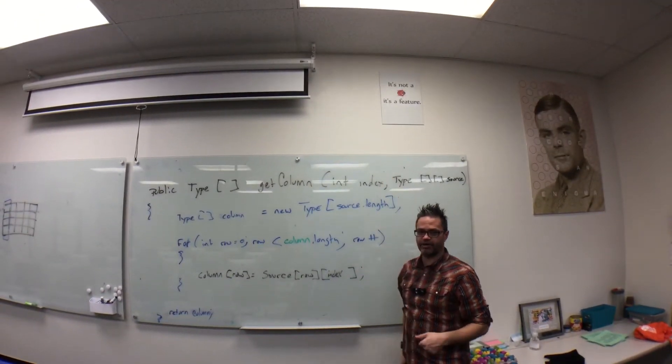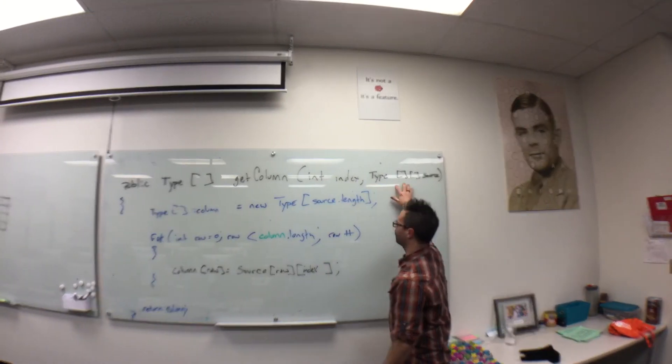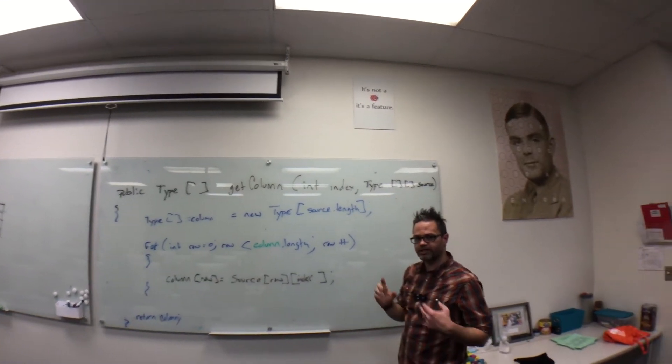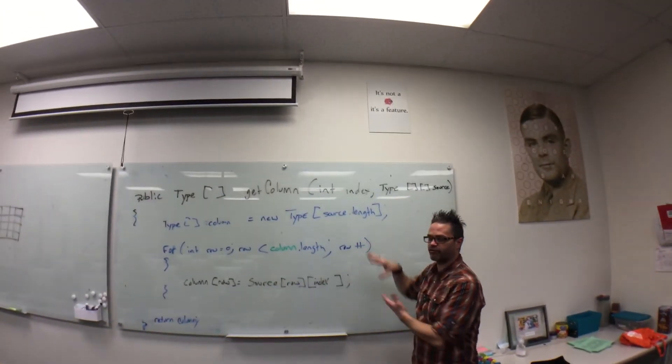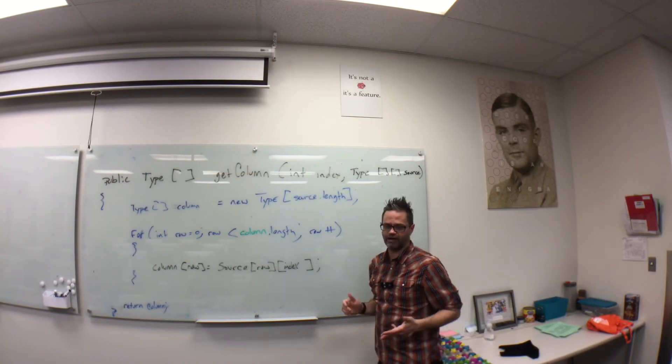However, perhaps we don't have a data member or local variable we have access to, so we want to have a second parameter. We're going to have a type 2D array named source, because we want to get the information from that. We can send that in here and have it as a reference that we work with inside the block of code for our method body, so we can have the logic attached to it.